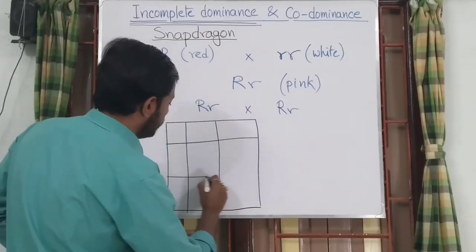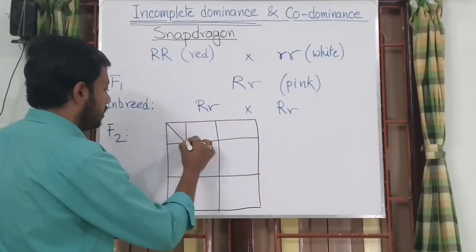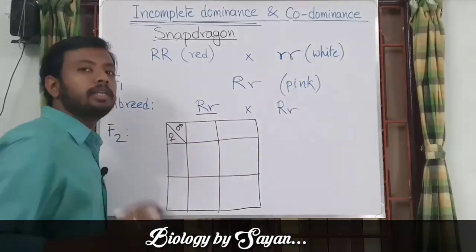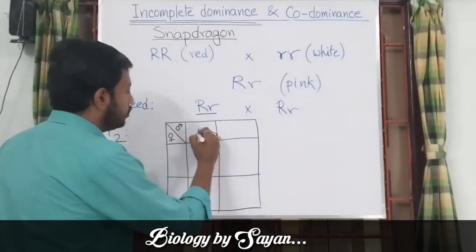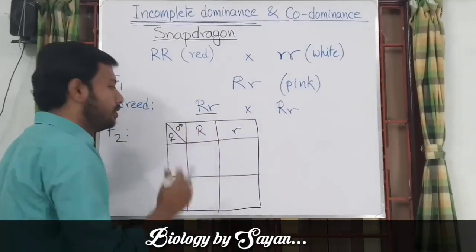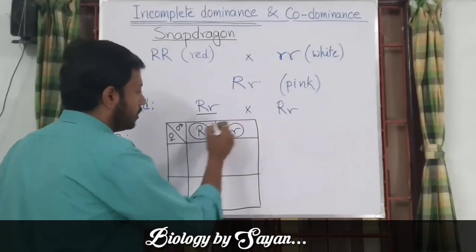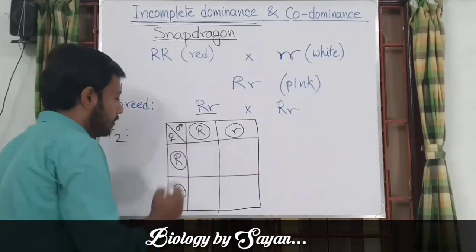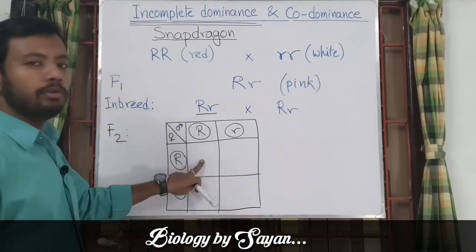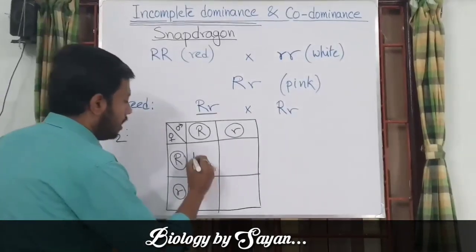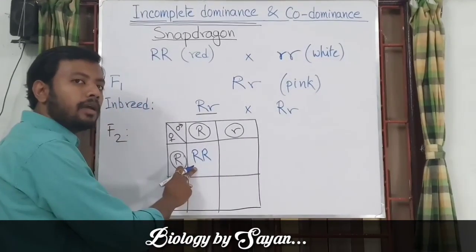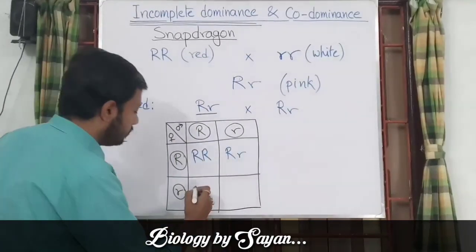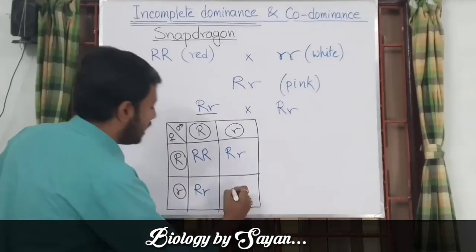Let's draw a Punnett square with its different chambers, and put the symbols for male and female. As both hybrid individuals are genotypically the same, they will produce the same kind of gametes — capital R and small r. Now let's put the genotypes of the F2 generation offspring: capital R capital R, capital R small r, another capital R small r hybrid, and a homozygous recessive individual.